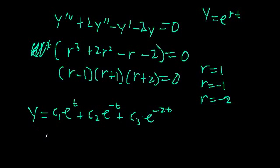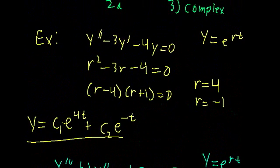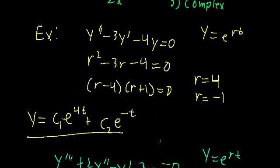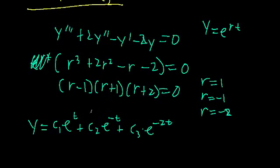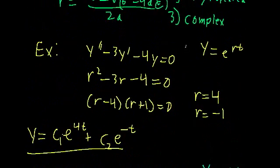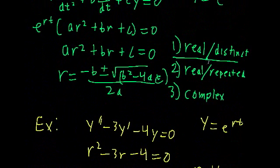We found the general solution to a third-order differential equation — linear, homogeneous, with constant coefficients. Notice the pattern: for a second-order equation we had two linearly independent solutions and two arbitrary constants, while for a third-order equation we have three linearly independent solutions and three arbitrary constants. We'll discuss the theory behind this in a later video. That wraps up real and distinct roots — in the next video we'll be covering repeated roots.